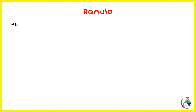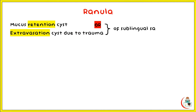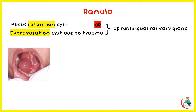Ranula is defined as a mucus retention cyst, which is a true cyst or more commonly an extravasation cyst due to trauma of the sublingual salivary gland. Trauma causes rupture of the gland with extravasation of mucus under the oral mucosa.